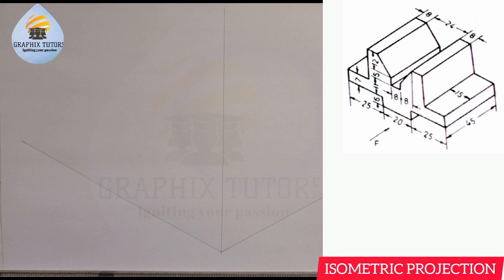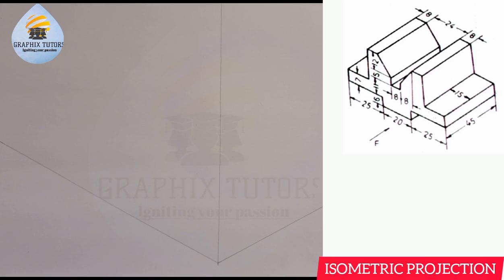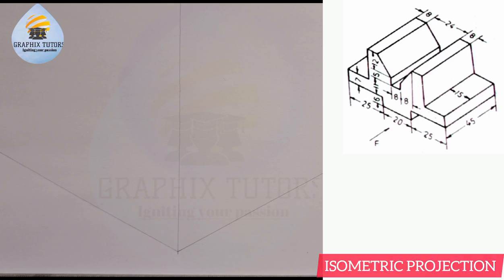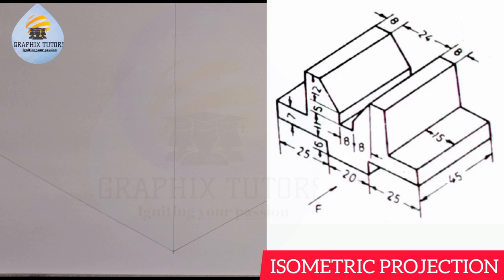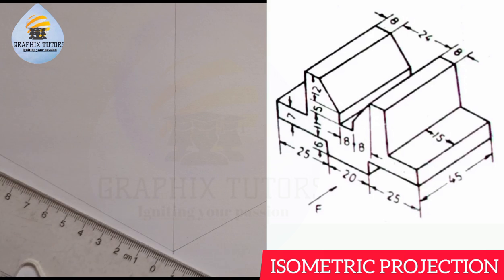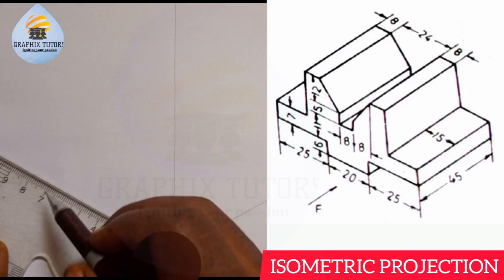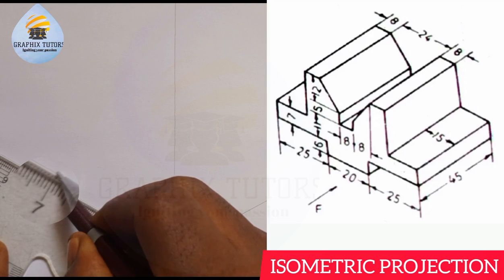Let me zoom this up a little bit. Now if you look from this point to this point, the entire length here is 70. So from here I'm going to measure 70 — from 0 to 7, that is 70 millimeters.